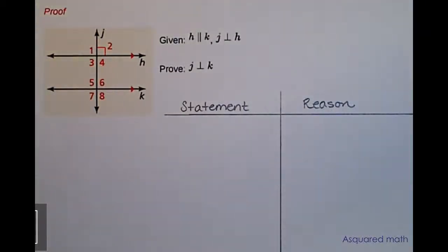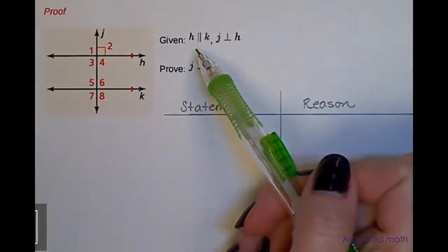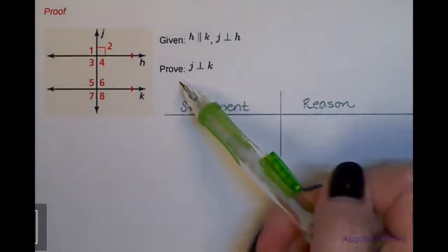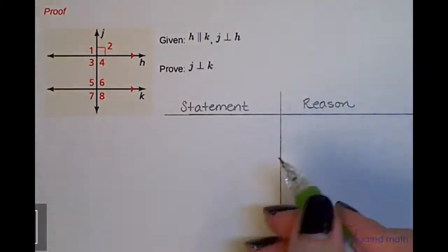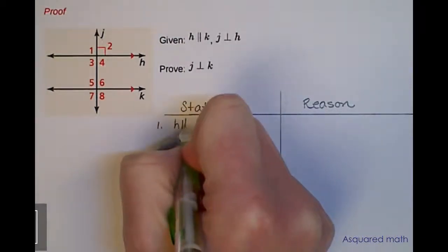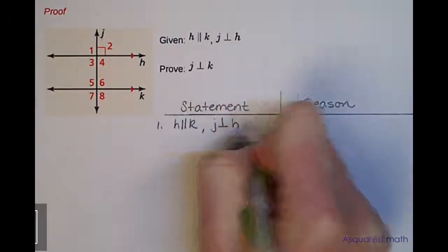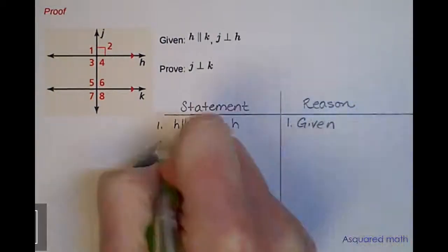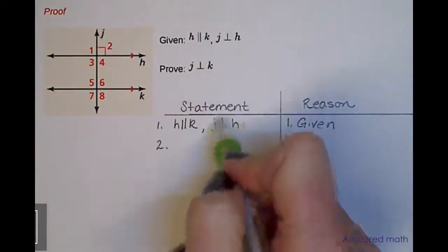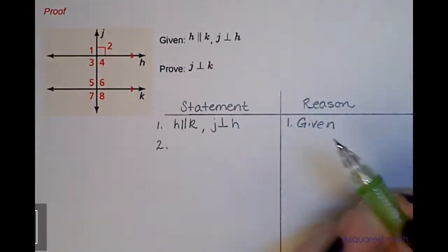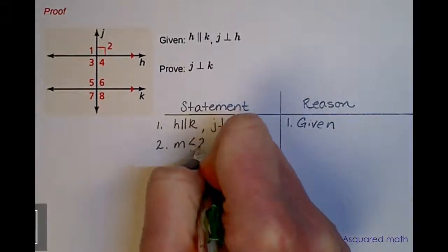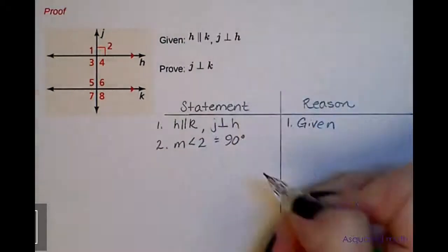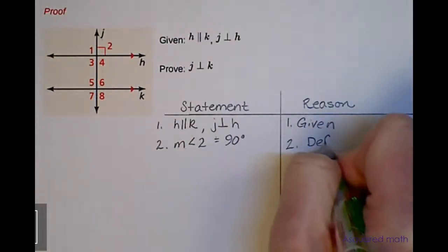We're going to do an example proof using the perpendicular-transversal theorem. We're given that H is parallel to K and J is perpendicular to H, and asked to prove that J is perpendicular to K. Statement 1: H is parallel to K and J is perpendicular to H — reason: given. Statement 2: we take the idea of perpendicular and express it as a number, so the measure of angle 2 equals 90°. The reason is the definition of perpendicular lines.